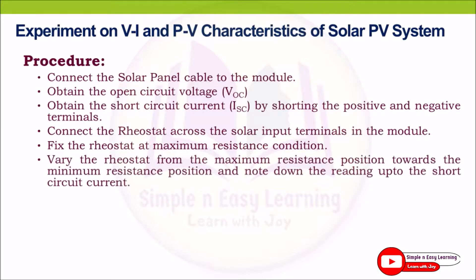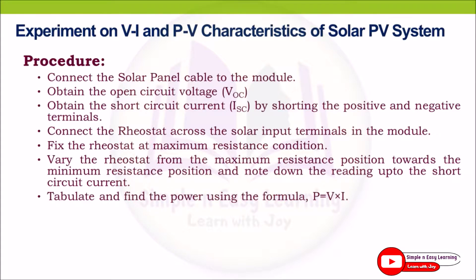Vary the rheostat from maximum resistance position towards the minimum resistance position and note down the readings up to the short circuit current. Tabulate the readings and find the power by multiplying voltage with current: P = V × I.